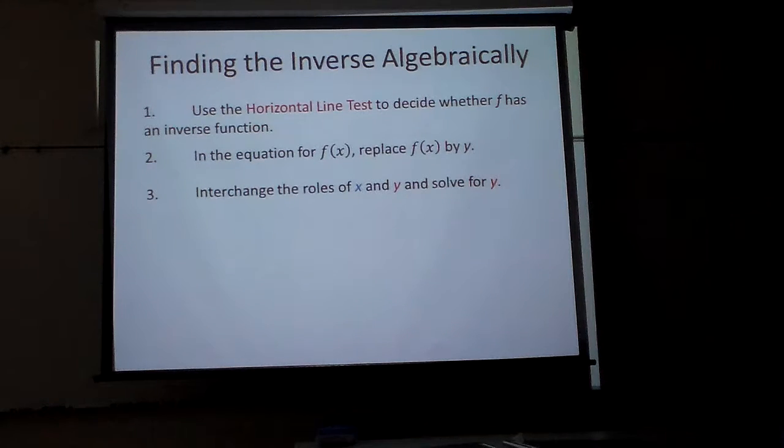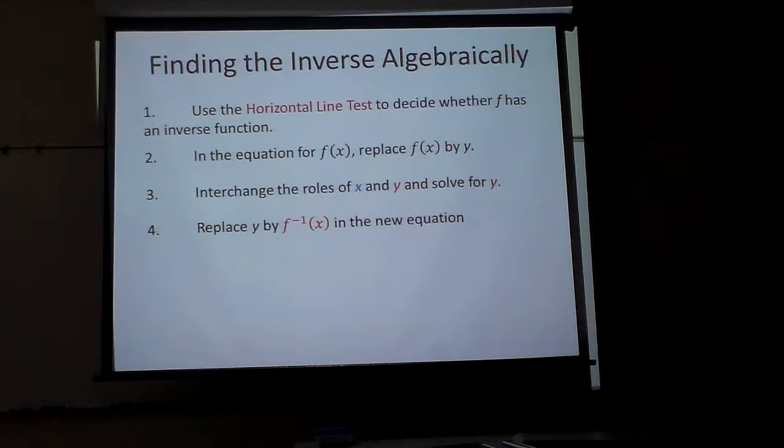First off, we have to determine that the inverse is a function, and the horizontal line test will do that. Then I'm going to replace f of x with y. Then I'm going to switch x and y and solve it. And then when I get done, I'll replace the y with the inverse, that f negative 1 of x.